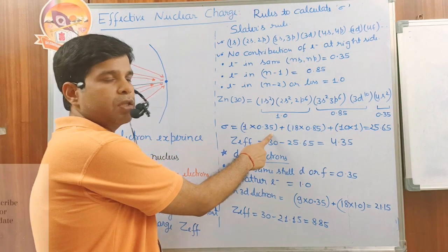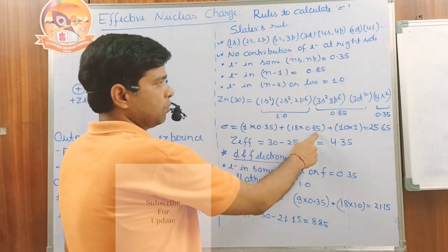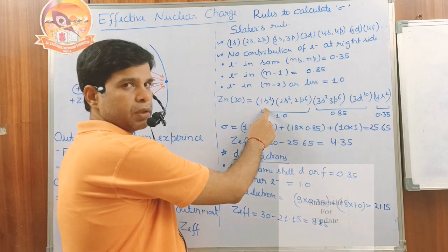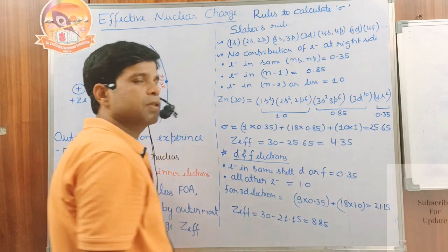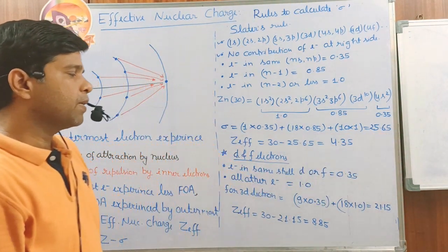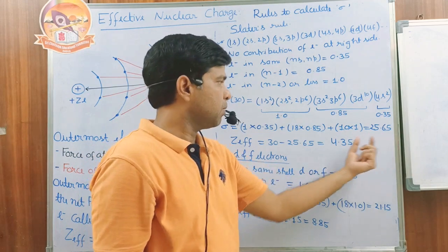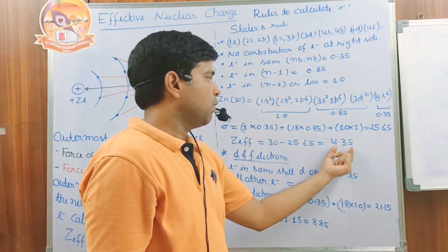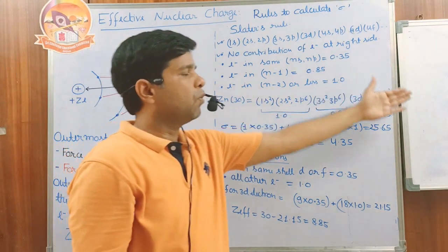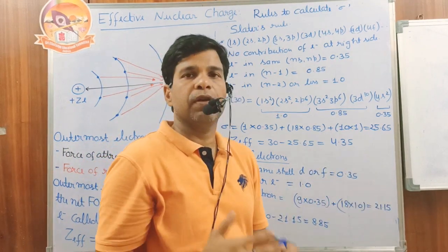So the Sigma calculation is: 1 electron in 4s × 0.35, plus 18 electrons in the third shell (3s 3p 3d) × 0.85, plus 10 electrons in (n-2) or lower × 1.00. The Sigma value becomes 25.65. Therefore, Z_effective = 30 minus 25.65 = 4.35. This means the outermost 4s electron of zinc experiences an effective nuclear attraction equivalent to only 4.35 protons.